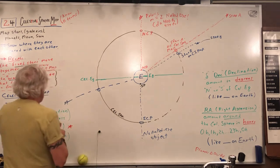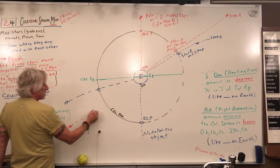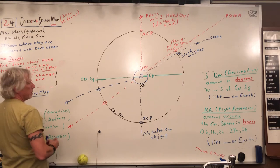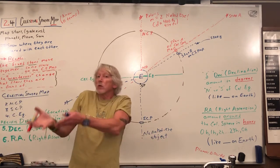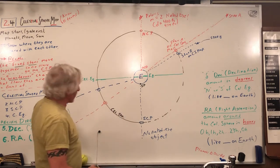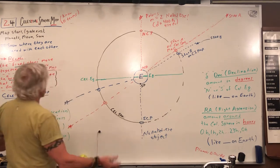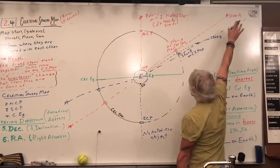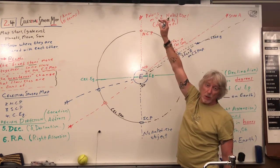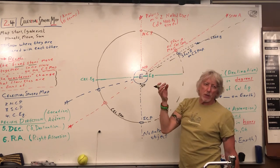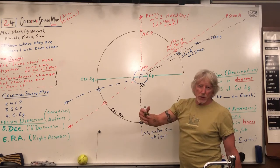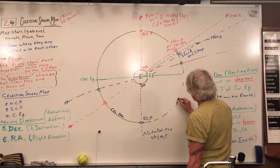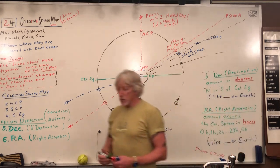Stars can appear far apart but physically be closer together, or appear close but be far apart. Galaxies are on the map now too — we didn't know about them in the past, but they still have a location. Galaxies are much farther than the stars we see at night. A very close galaxy would be a tenth of a million light years; most are millions of light years away; distant galaxies are billions of light years away. But they all have a place on the map.